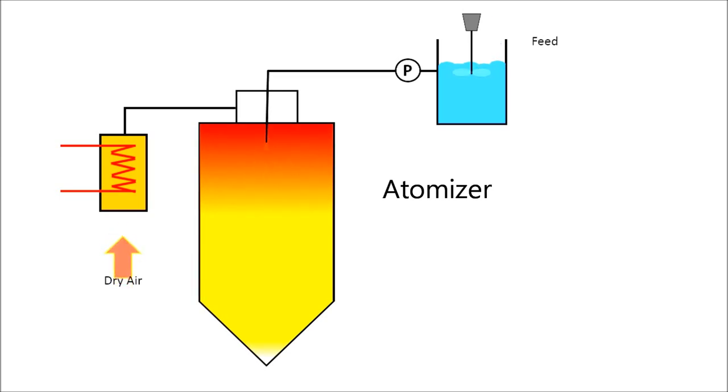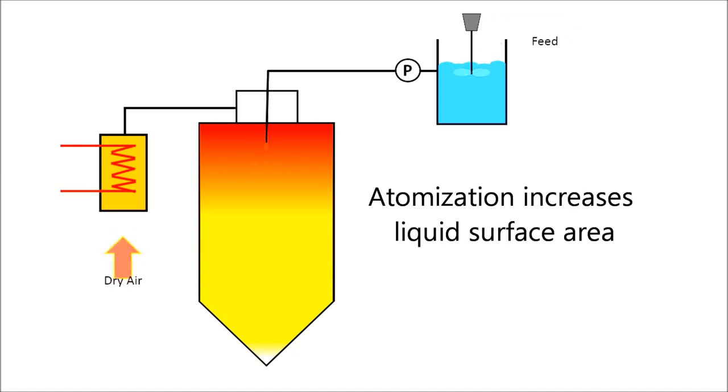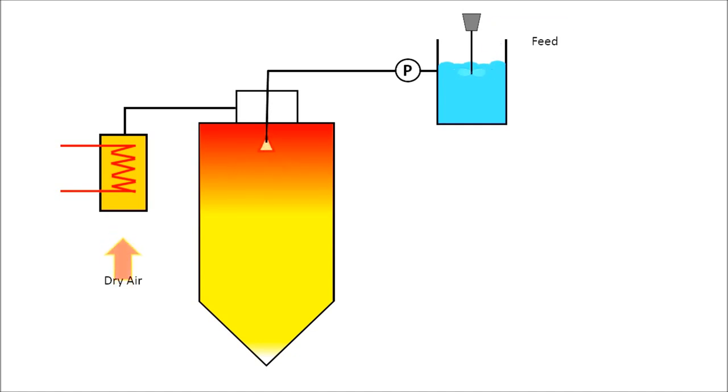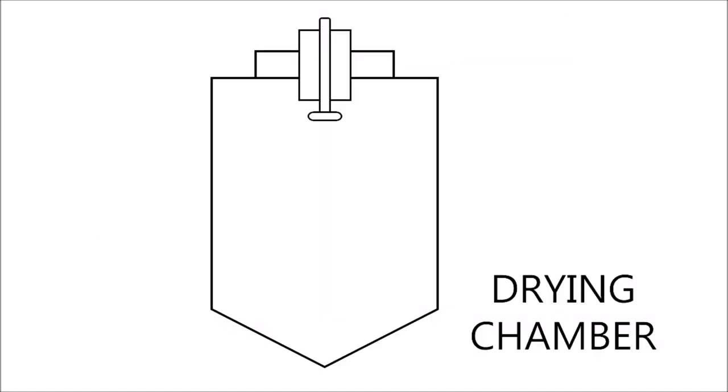The rotary atomizer then breaks the liquid into tiny droplets and disperses the slurry droplets into the heating chamber. Atomization is important here because it creates greater liquid surface area for maximum contact between air and liquid droplets. The atomizer will produce a liquid mist where it leaves the atomizer and be distributed over the drying chamber.